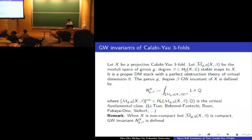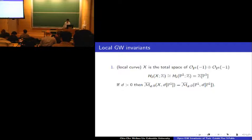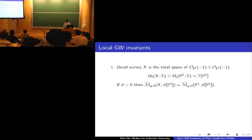Let me give you a couple of examples. First, the local curve — the resolved conifold — which is the total space of O(-1) + O(-1) over P1. It is a non-compact Calabi-Yau threefold. The second homology class of X equals the second homology group of the base P1. If you have any non-constant holomorphic map from a Riemann surface to the total space, it must factor through the zero section. So as topological spaces, these two moduli spaces are actually identical when the degree is positive.